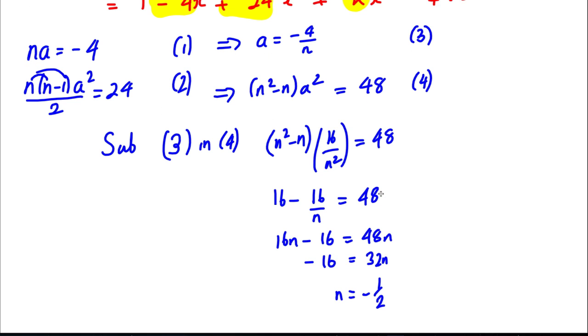Now, if N is equal to negative 1 half, A is negative 4 divided by negative 1 half, which would be equal to 8. So we've got our answers here. Our answer is N is equal to negative 1 half and A is equal to 8.